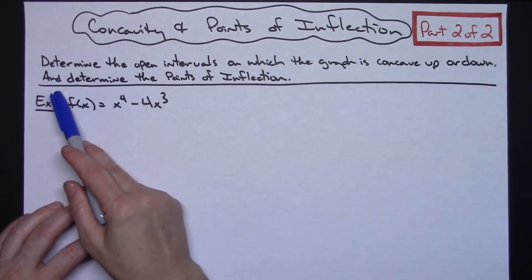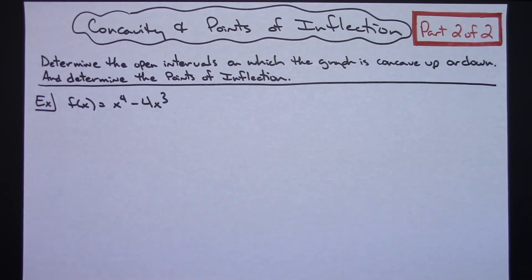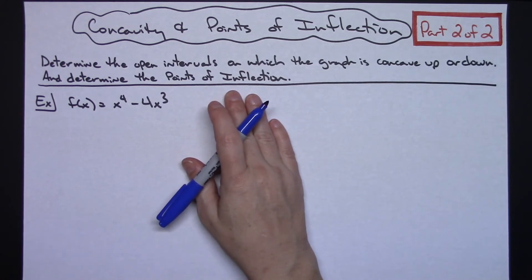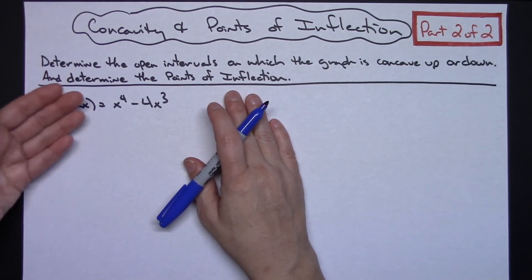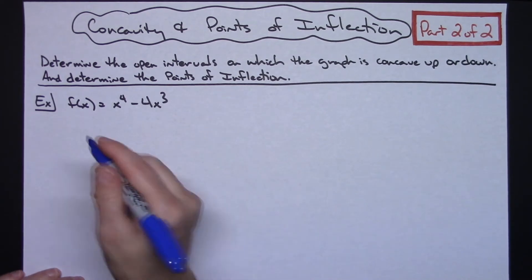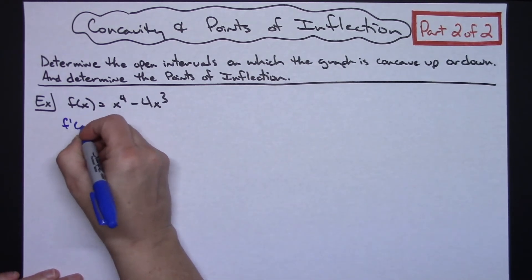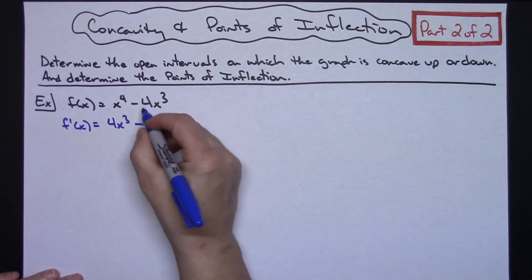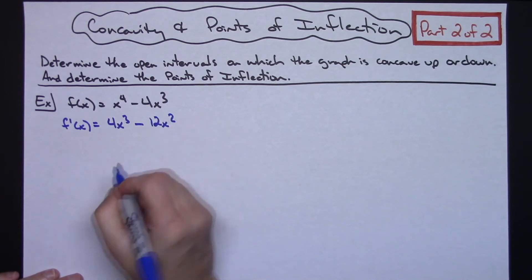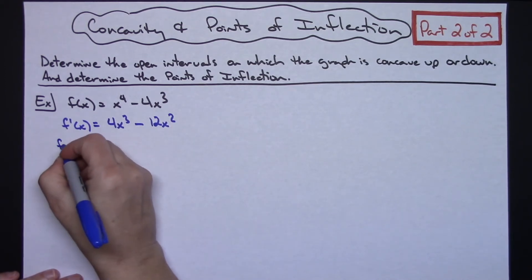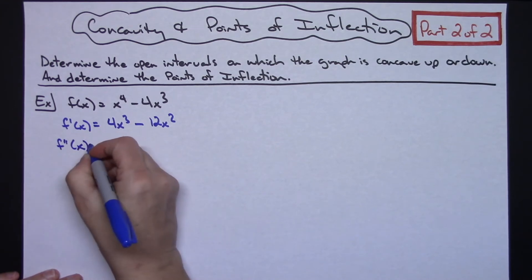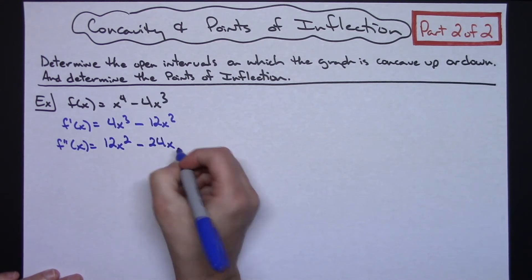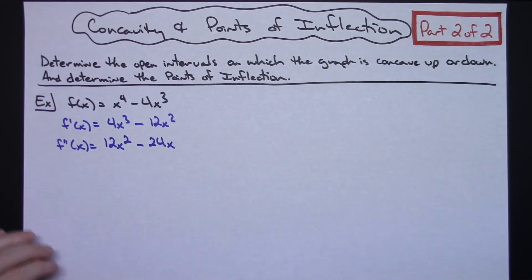The directions say: determine the open intervals on which the graph is concave up or down, and determine the point of inflection. Since points of inflection come from the second derivative, we need to calculate both the first and second derivatives. The first derivative f prime is 4x cubed minus 12x squared. Then the second derivative f double prime of x is equal to 12x squared minus 24x.